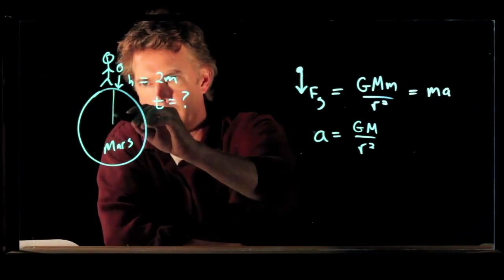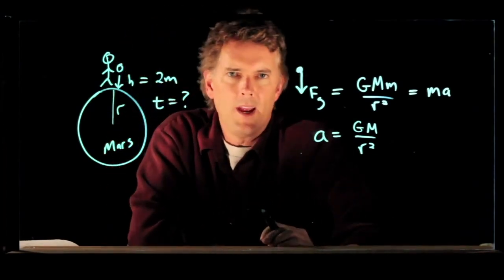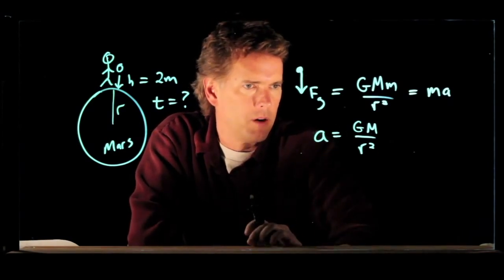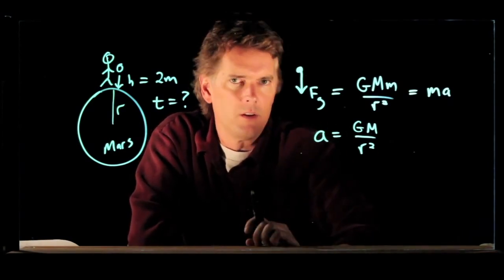and if you're at the surface of Mars, then we just want the radius of Mars. Big M is of course the mass of Mars, G is the universal constant.